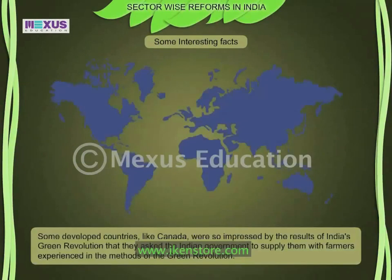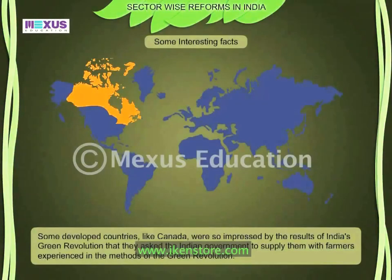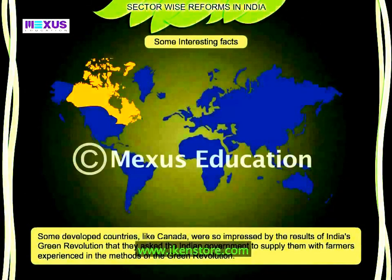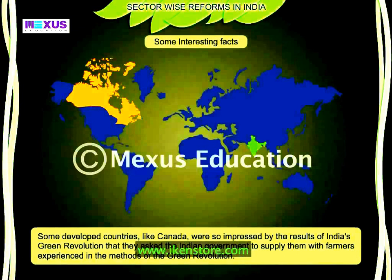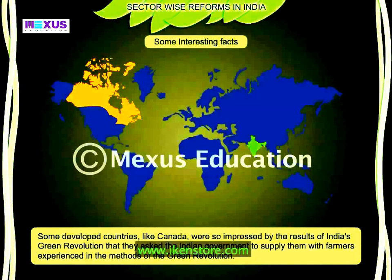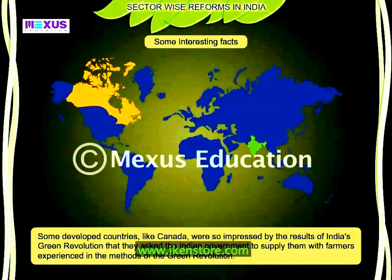Some developed countries, especially Canada, which were facing a shortage in agricultural labor, were so impressed by the results of India's Green Revolution that they asked the Indian government to supply them with farmers experienced in the methods of the Green Revolution. Many farmers from Punjab and Haryana states in northern India were thus sent to Canada, where they eventually settled.